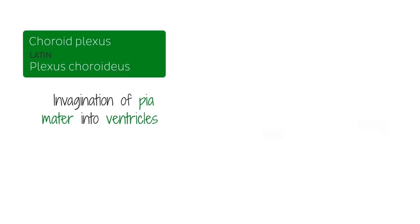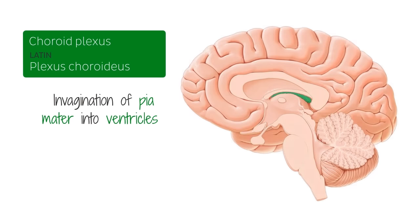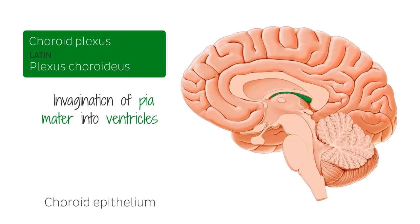As we return to our image of the choroid plexus, it's important to note that the choroid plexus consists of two components: the highly vascularized connective tissue of the pia mater, and a covering, or plexus, of choroid epithelium.